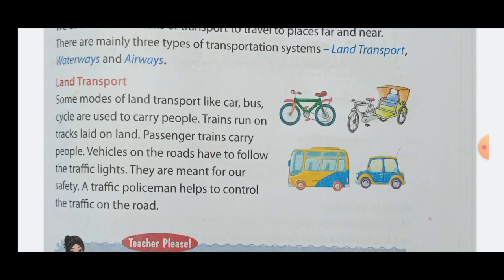Some modes of land transport like cars, buses, and cycles are used to carry people. Trains run on tracks laid on land. Passenger trains carry people. Vehicles on the road have to follow the traffic lights — they are meant for our safety.